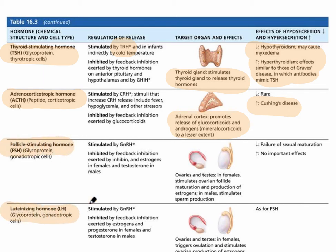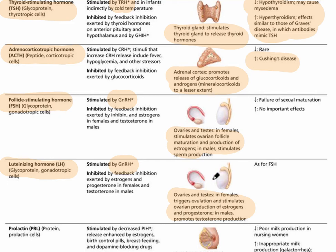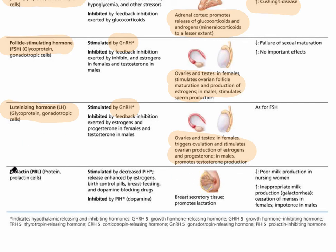The next two are the gonadotropic hormones because they affect the gonads. Both are stimulated by the same hormone, GnRH, and both share the same target organs — the ovaries and testes. FSH causes oogenesis (egg development in the ovaries) and spermatogenesis (sperm development in the testes). LH causes ovulation in the ovary and is responsible for testosterone production in the male.